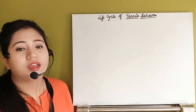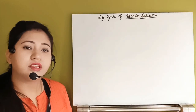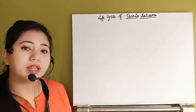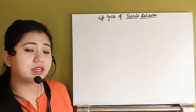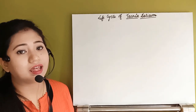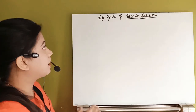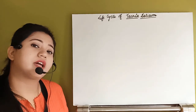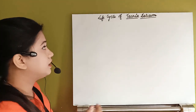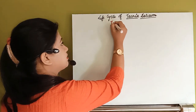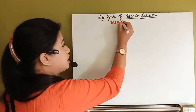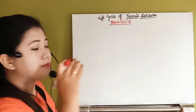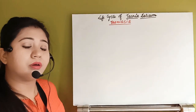Hello students. Last day we completed Fasciola hepatica in the phylum Platyhelminthes. In the phylum Platyhelminthes we also require another larva, and that larva is Taenia solium. Taenia solium causes a disease called taeniasis. So what happens in taeniasis, and what are the main hosts where it completes its life cycle?